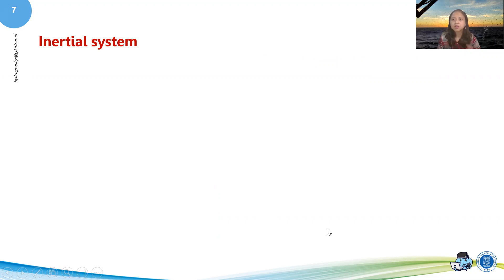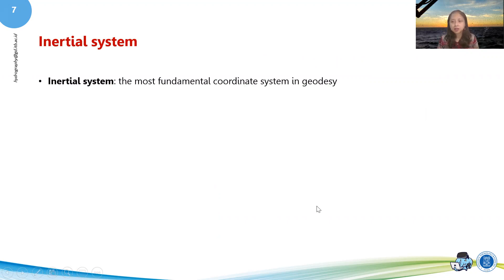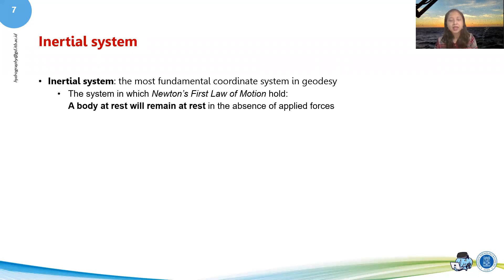So this is basically the continuity of what we have learned in kinematics. In the inertial system, this is the most fundamental coordinate system in geodesy. And in this system, Newton's first law of motion holds. So just to refresh, Newton's first law stated that a body at rest will remain at rest in the absence of applied forces. Also, in this inertial system, there is no acceleration, but uniform linear motion may exist. So uniform linear motion is basically motion that is in constant speed and has no rotation.